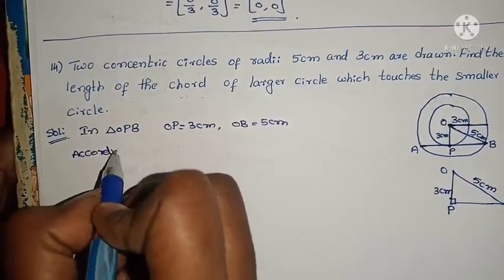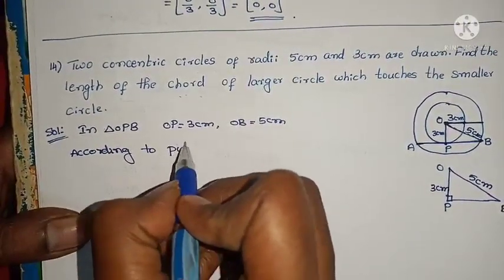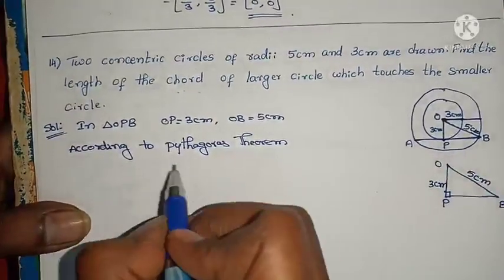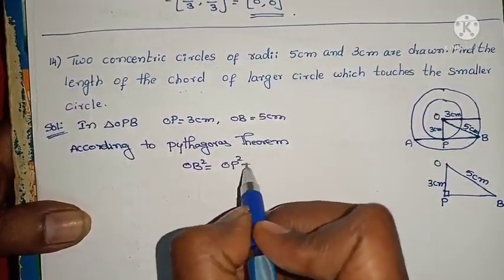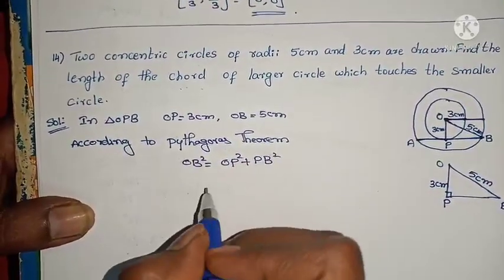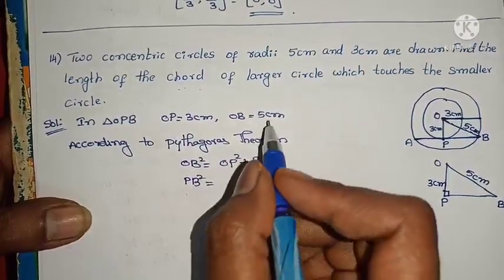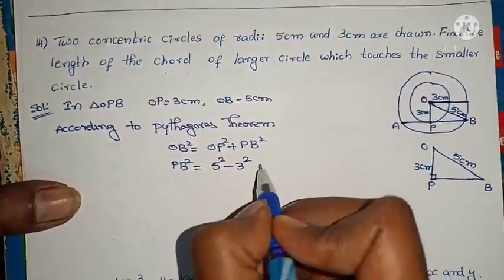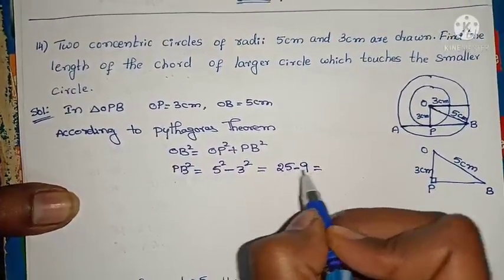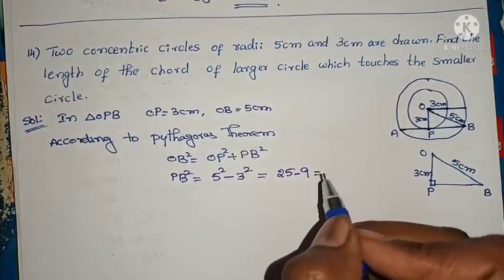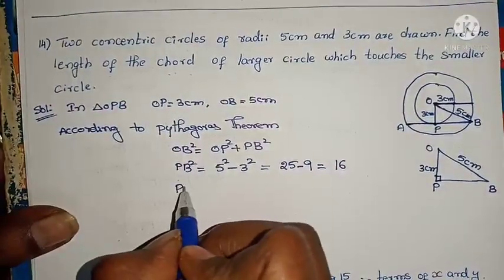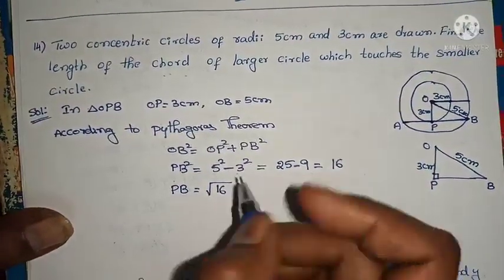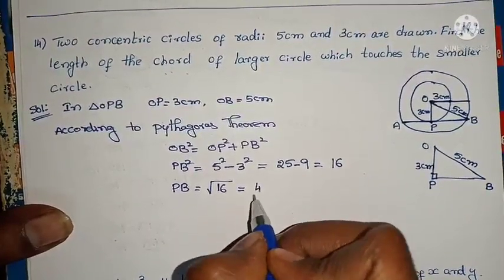According to Pythagoras' theorem: OB² = OP² + PB². So PB² = OB² − OP². OB = 5 cm, so OB² = 25. OP = 3 cm, so OP² = 9. Therefore PB² = 25 − 9 = 16. PB = √16 = 4 centimeters.